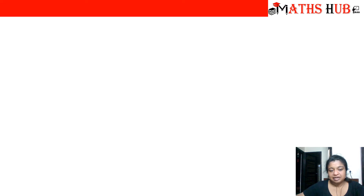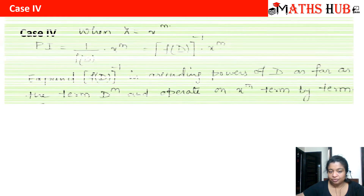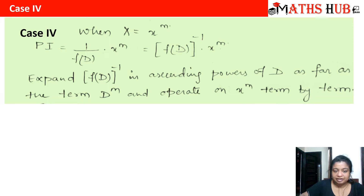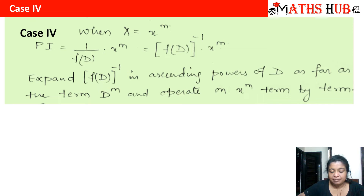Now let us deal with the fourth case. The fourth case applies when the right-hand side function is a power of x, say x^m. In that case we take the f(D) term into the numerator, making it f(D)^(−1) times x^m, and we expand f(D) in ascending powers of D.